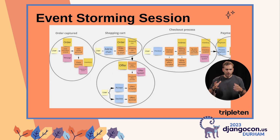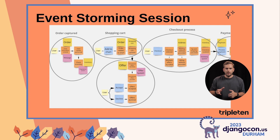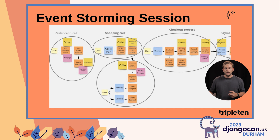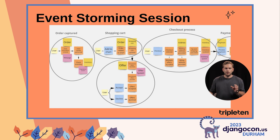But how do you find the boundaries in your domain? Event storming can help. It's a collaborative workshop to explore the project's domain and identify the key concepts, events, and processes involved. If you don't use this great tool in your project, try it — it is well described and formalized. Note that the choice of model boundaries is a strategic design decision. Bounded contexts are not fixed; you can refine your architecture over time by creating additional contexts or merging existing ones.